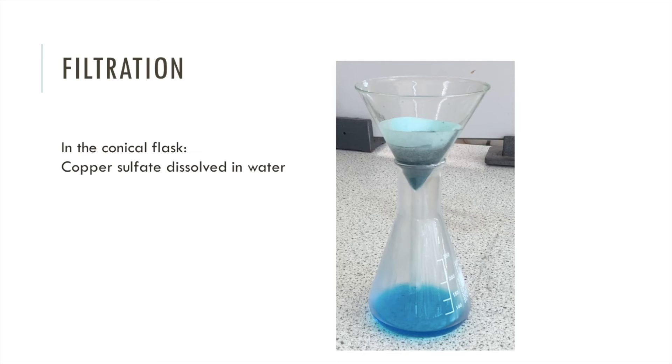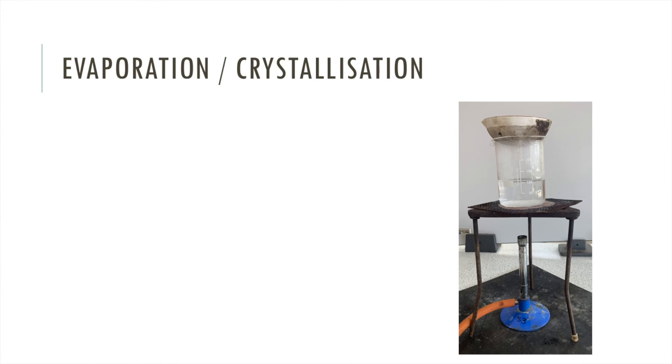So in the conical flask at the bottom, you've got your copper sulfate dissolved in water. Now copper sulfate is actually a dissolved solid, and your water is a liquid. All we want is the copper sulfate, we don't want the water. So now we need a separation technique that removes liquid from a solid, and for that we use evaporation.